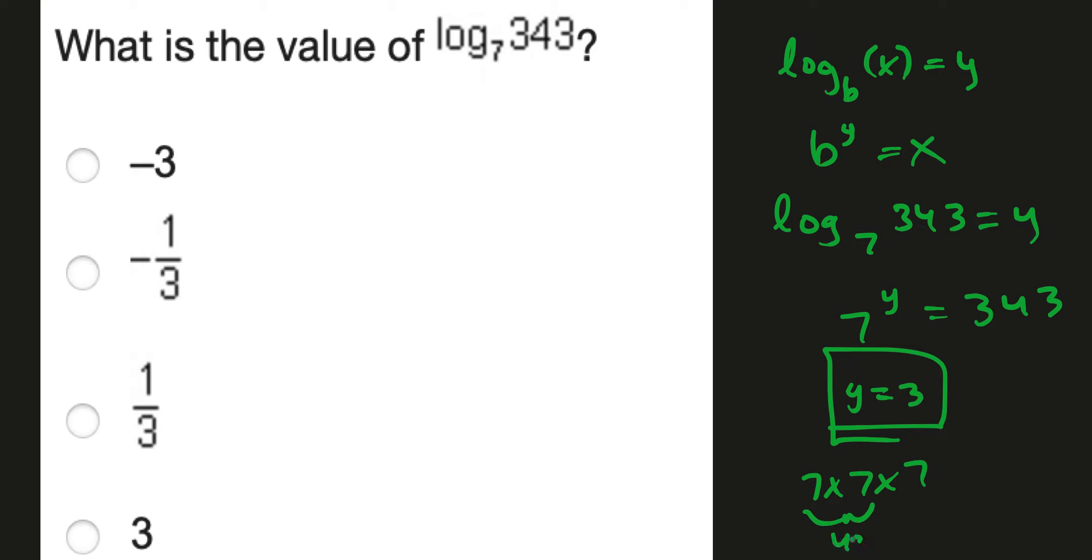Let's see, 7 times 7 is 49, times 7. 9 times 7 is 63. And then 7 times 4 is 28 plus 6 is 34. So it's 343, and that works out.